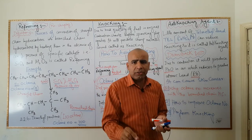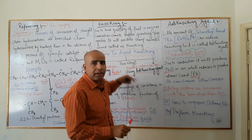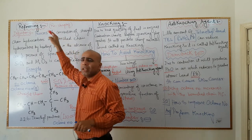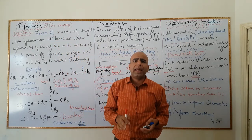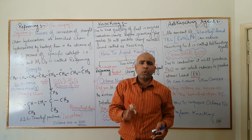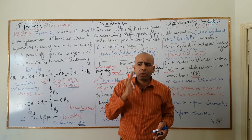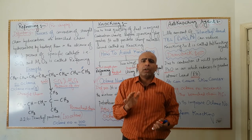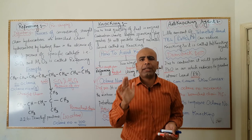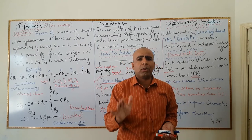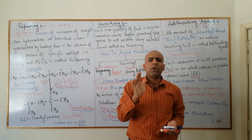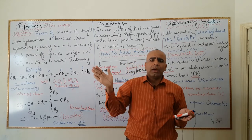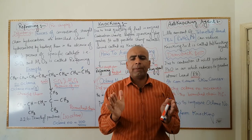So the better technique to improve octane number and reduce knocking is reforming. Reforming is the best method to ensure smooth combustion in the engine. Therefore, use high octane petrol in vehicles, because simple petrol has a lower octane number and causes knocking.